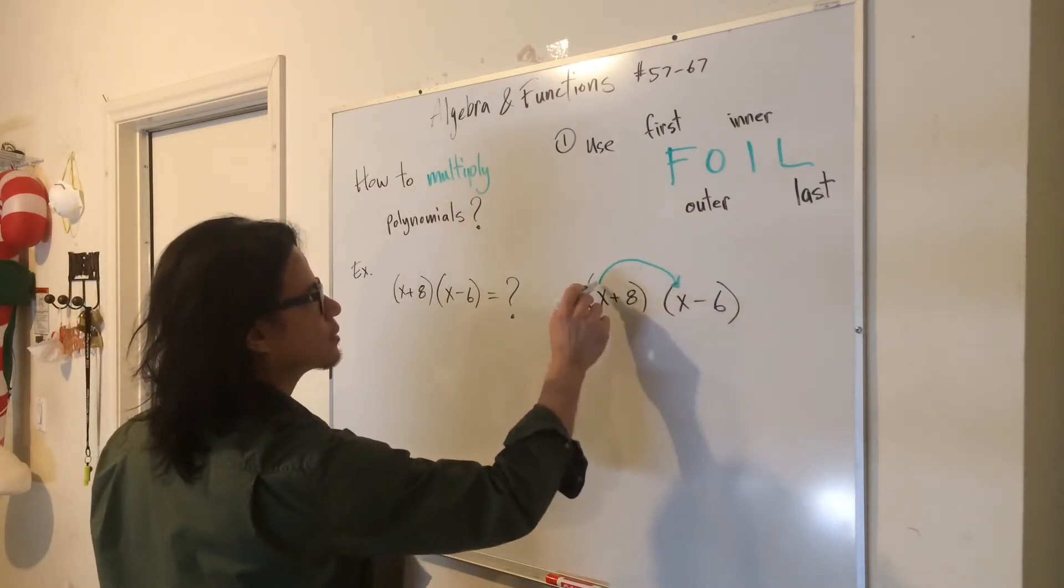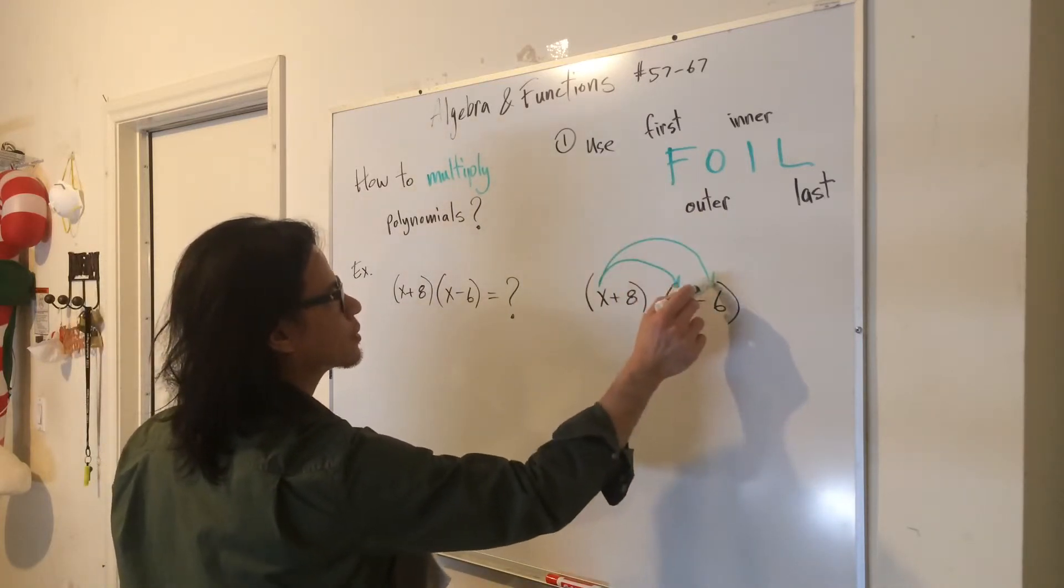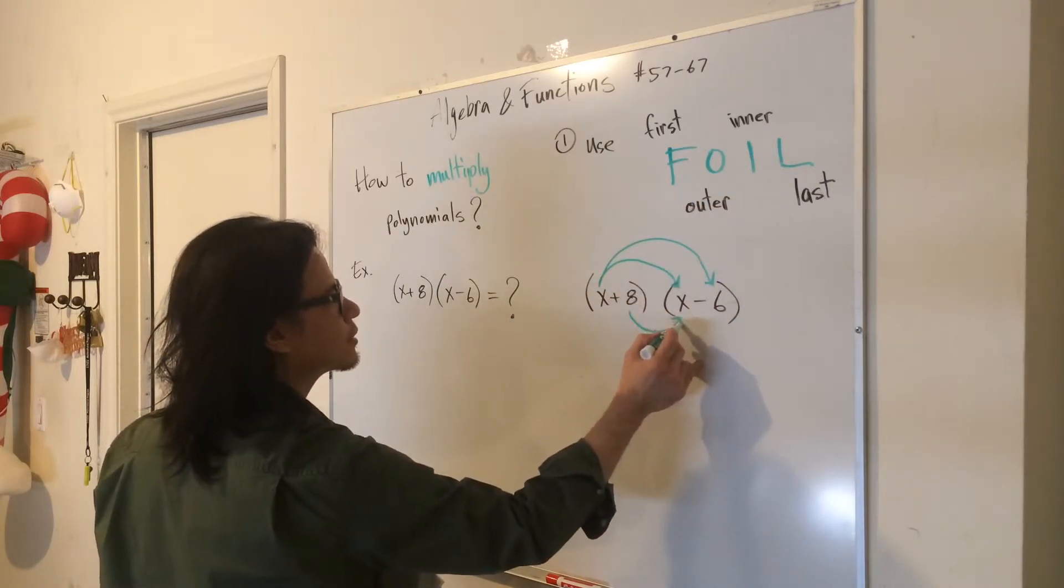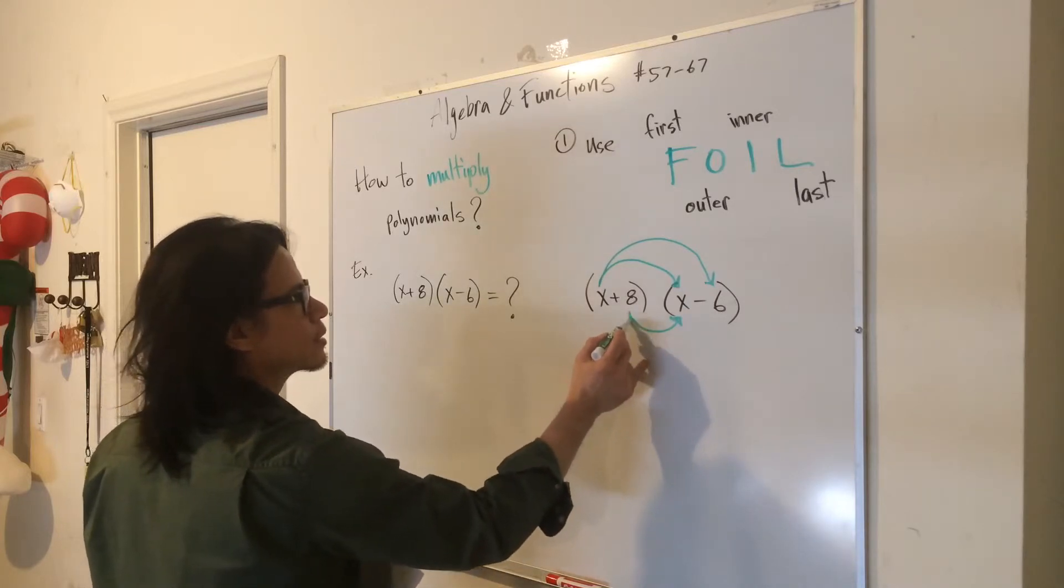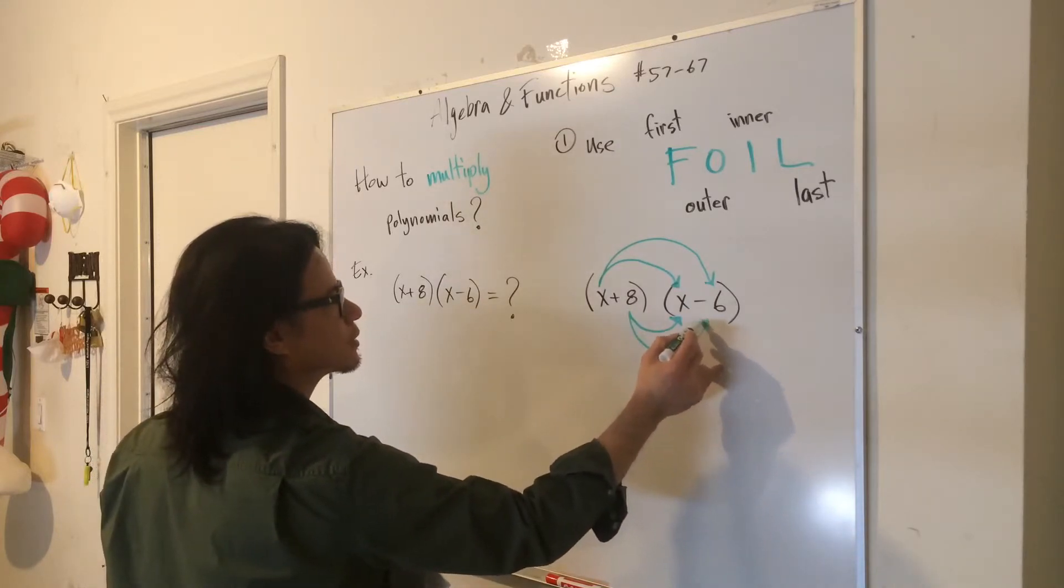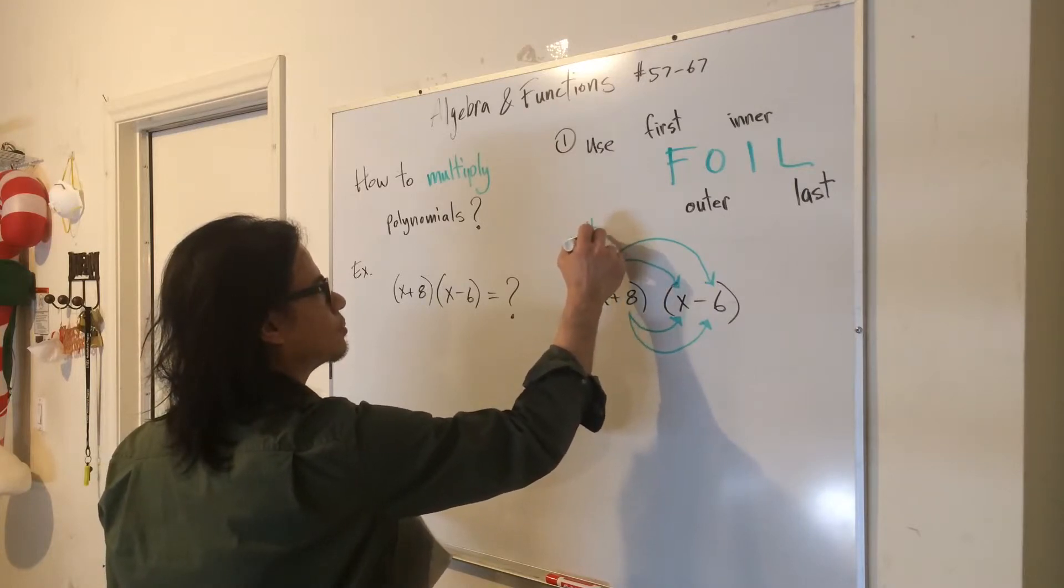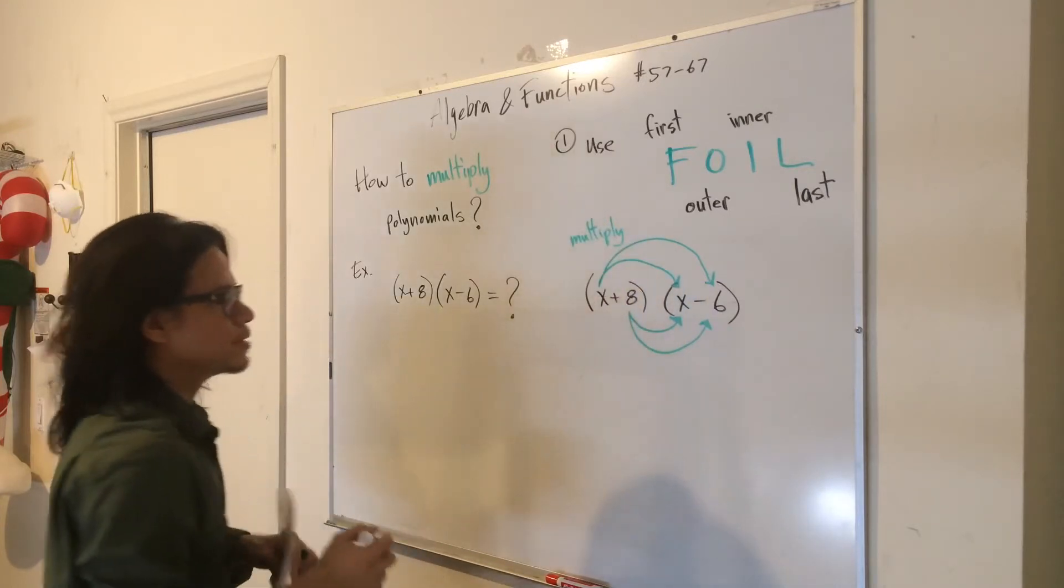The outer term, which is the x and the 6, multiply these two. The inner term, 8 times x, and then 8 times negative 6. So again, multiply to get your answer.